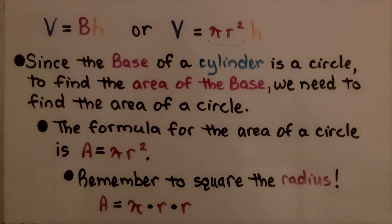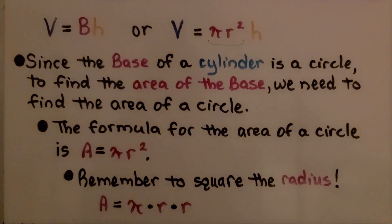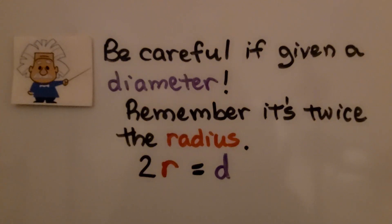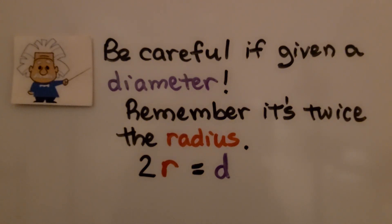Remember to square the radius — that would be pi times r times r, pi times the radius times the radius. Be careful if given a diameter; remember it's twice the radius. Two times the radius equals the diameter.